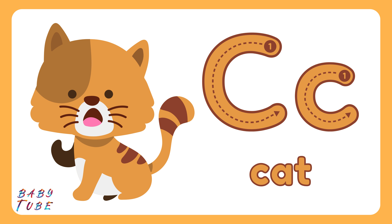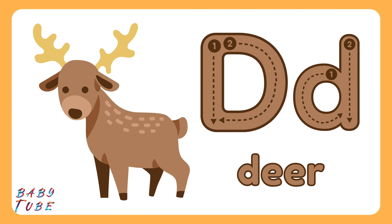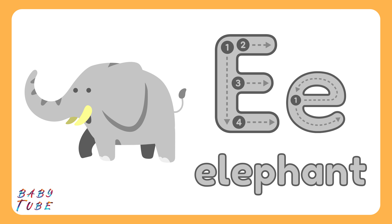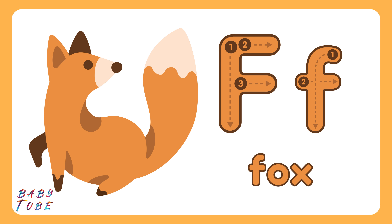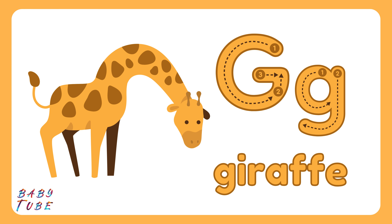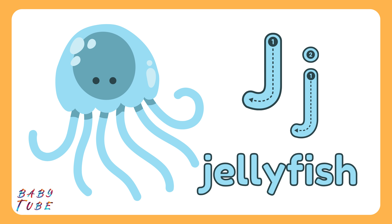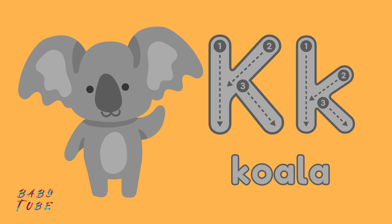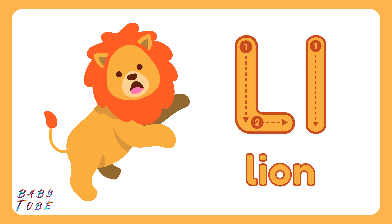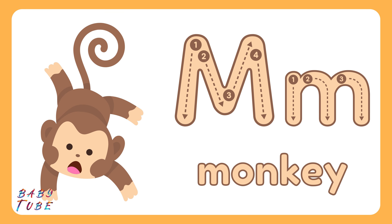Let's learn A to Z with animal's names. A for alligator, B for bear, C for cat, D for deer, E for elephant, F for fox, G for giraffe, H for hippo, I for iguana.